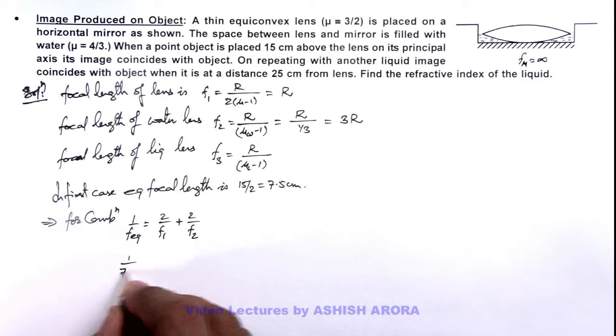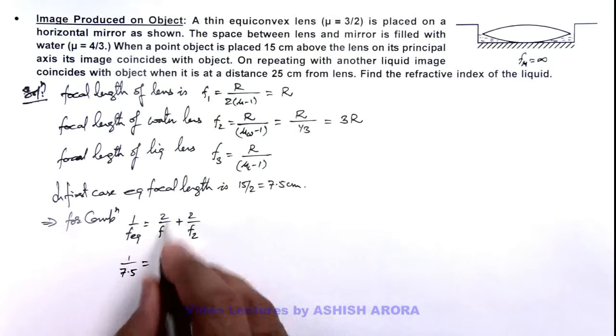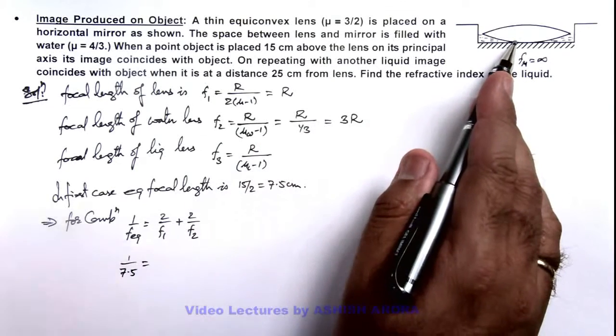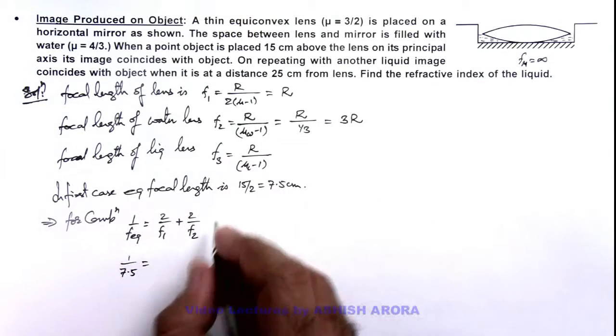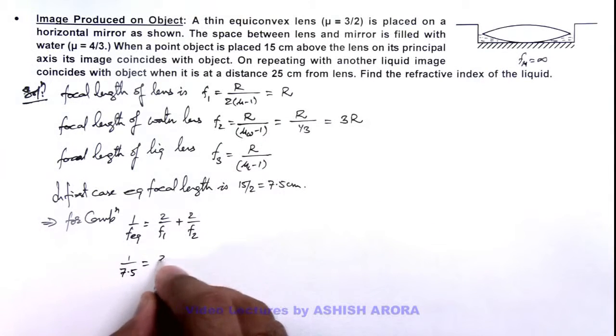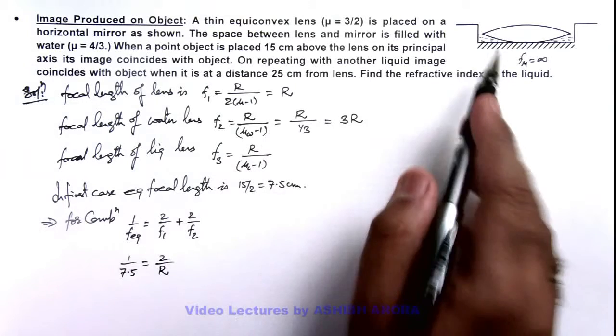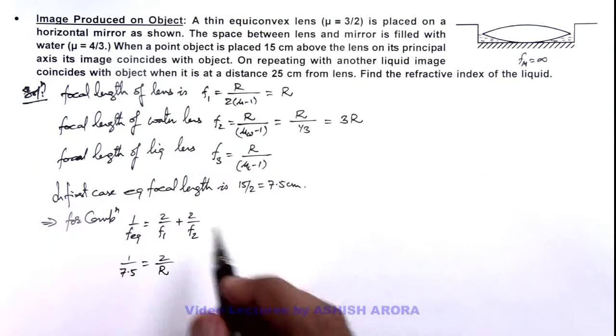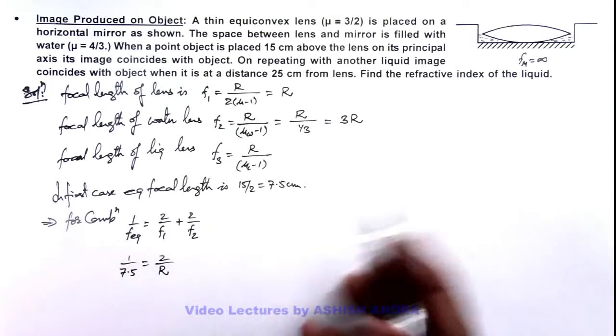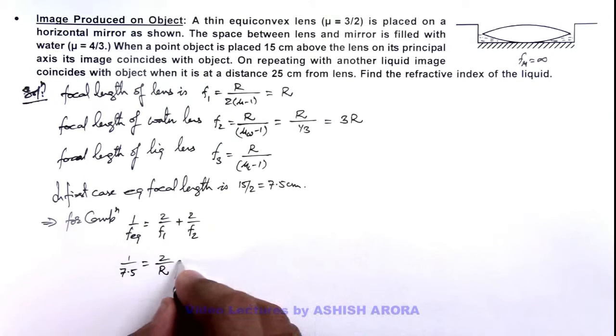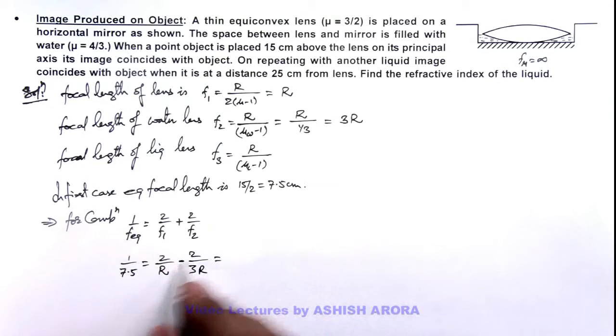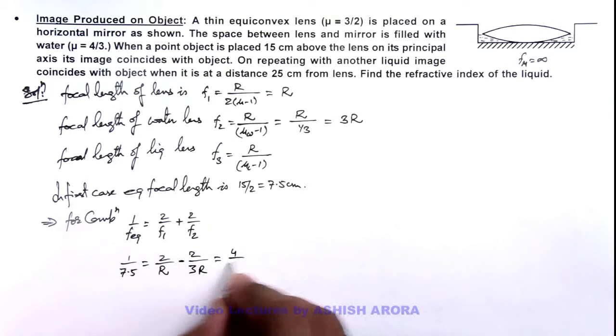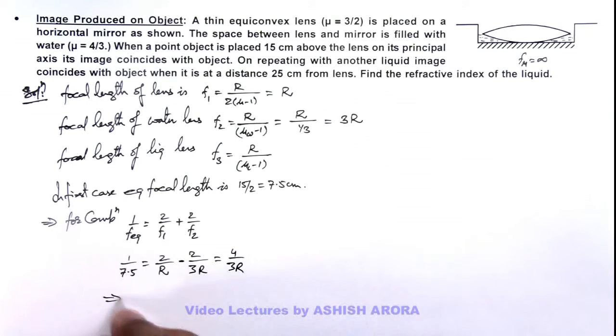So here we can write 1 by 7.5 is equal to - this first lens is a converging lens so its focal length r can be taken as positive, so this is 2/r. But for the second lens as being plano-concave lens, its focal length we take as negative so this will be minus 2 by 3r, which is equal to 4/3r, which implies the value of r is equal to 10 centimeter.